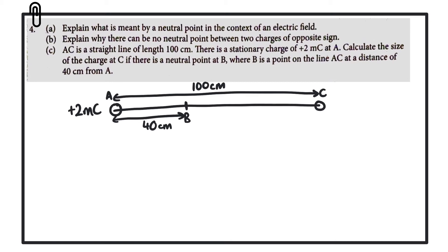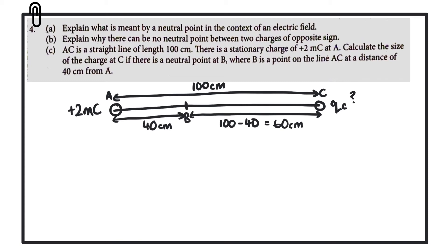Since we know B is 40 cm from A, we can also work out how far B is from C by subtracting: 100 − 40 = 60 centimetres. So the distance between B and C is 60 cm. We don't yet know the charge at C — that is what we are trying to find.